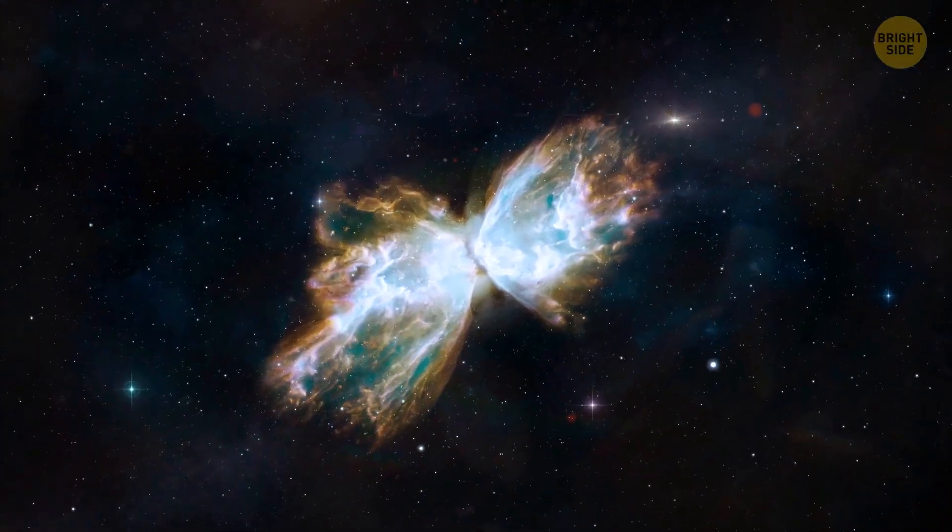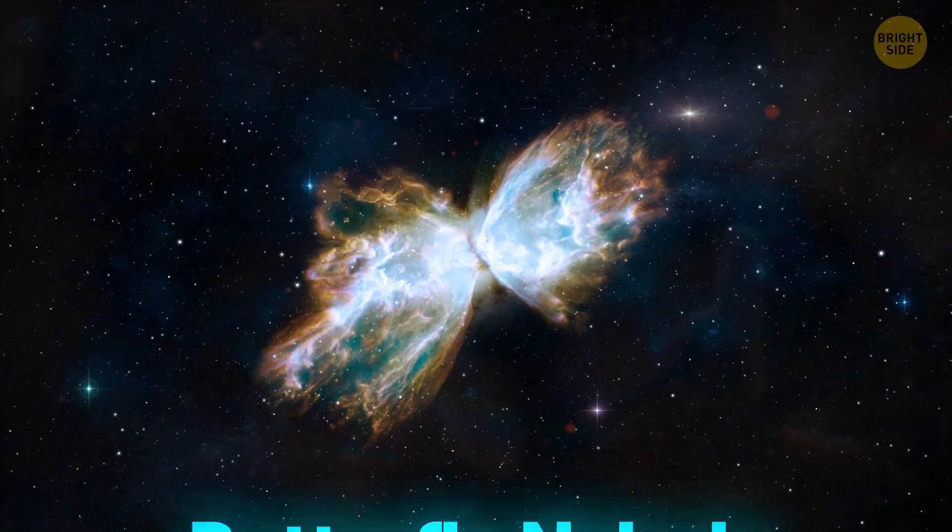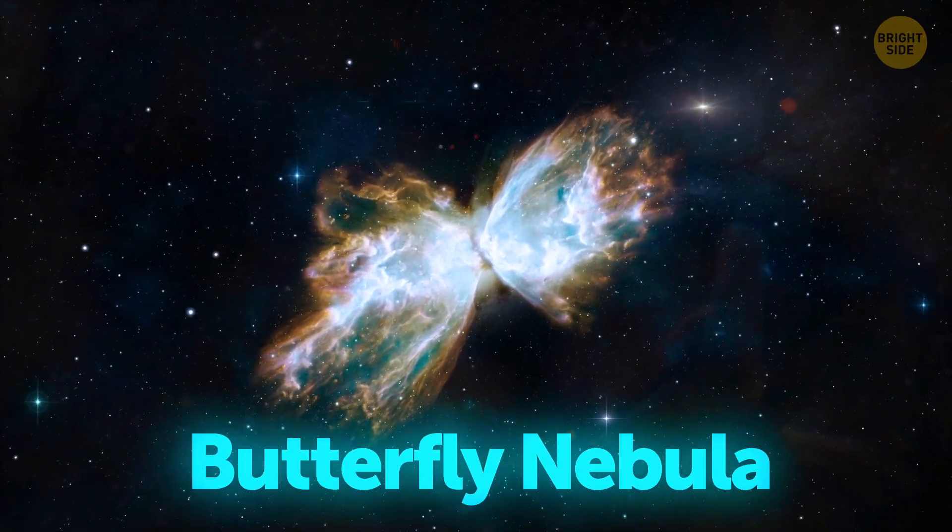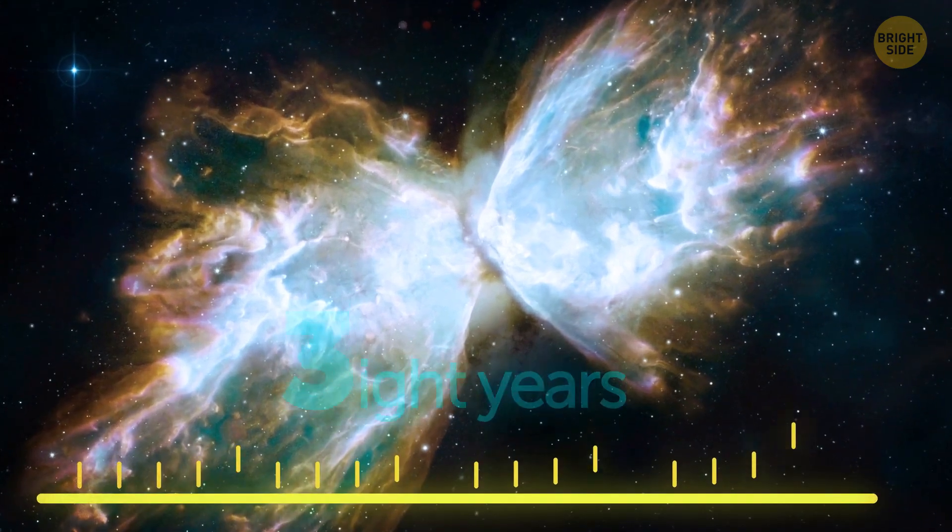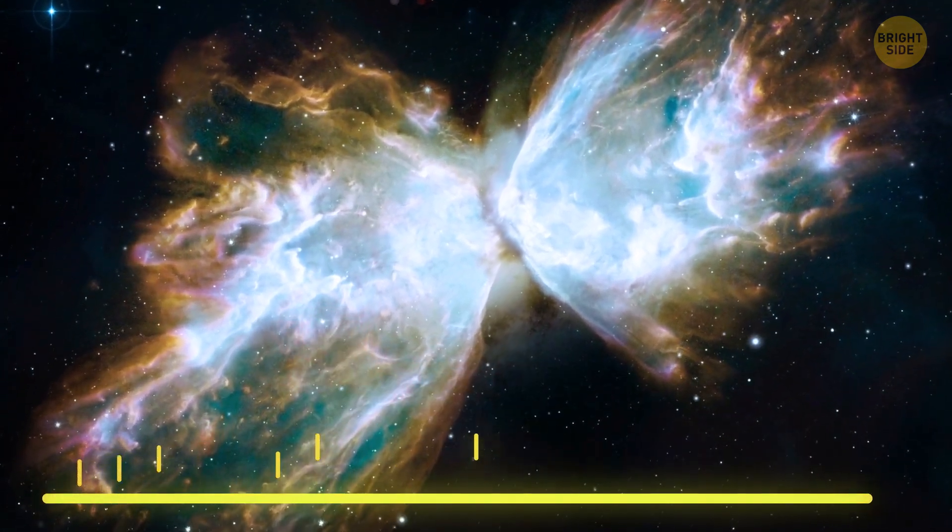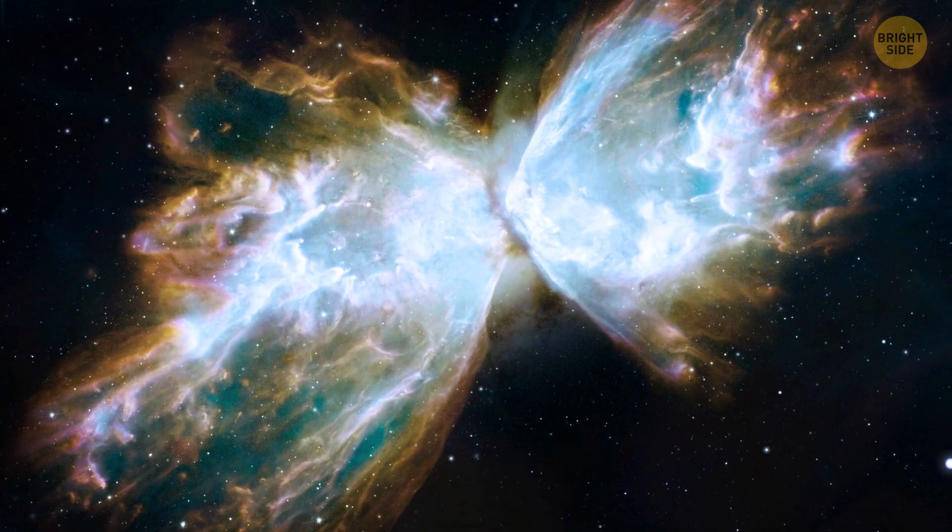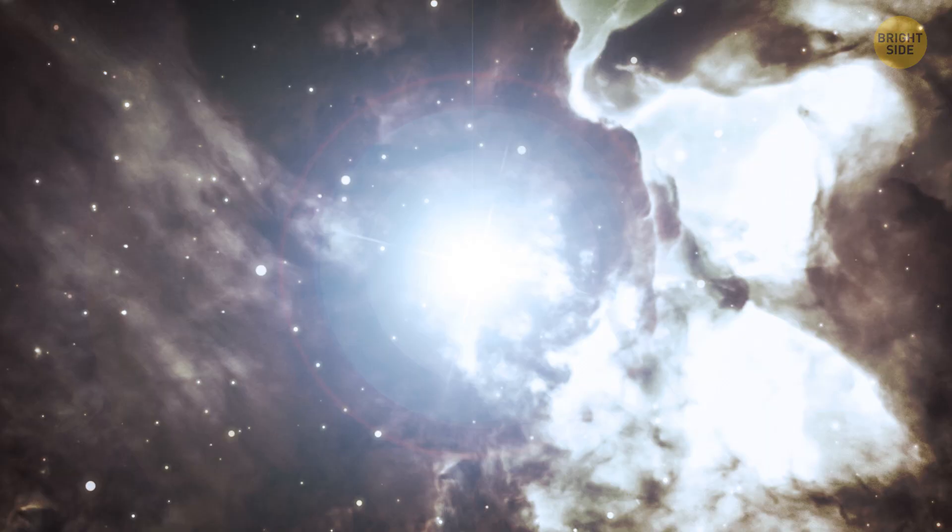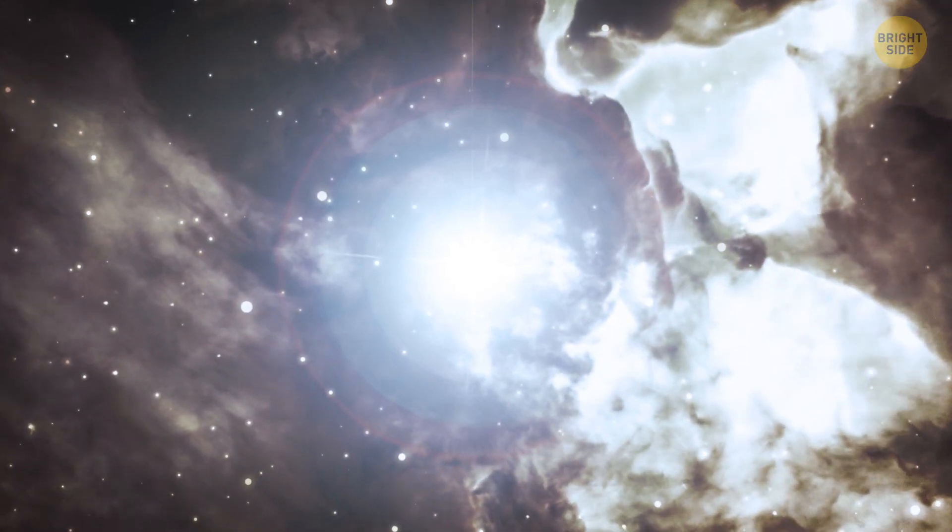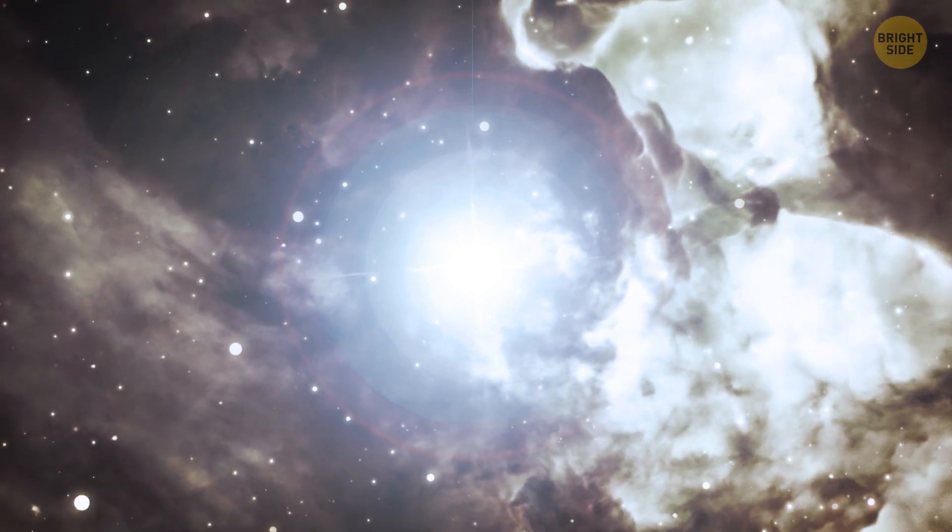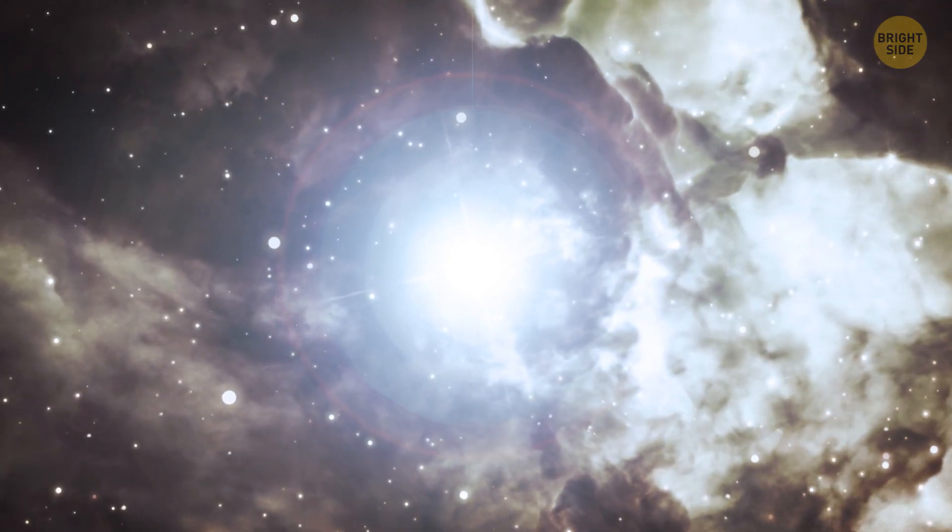Among some of the most beautiful nebulas out there, we must mention the Butterfly Nebula. Its wingspan is more than three light years. And the structure inside the nebula is one of the most complicated ever observed. The central star, a white dwarf, is heated to an incredible 450,000 degrees Fahrenheit.